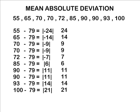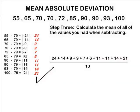After finding the distance of each element from the mean of your data set, you have to find the mean of all of the values you had when subtracting and this will give us the mean absolute deviation.